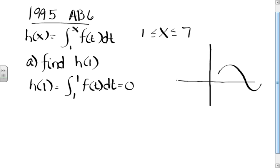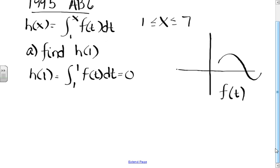It goes from 1 to 1. X is 1. So if I wanted to do the integral from 1 to 2, I'd be looking at the area under the curve. Because guess what? This is a graph of - I'm sorry it's not labeled, but this is F of T.